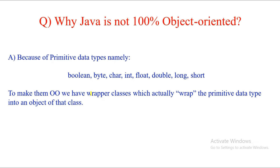As a workaround, Java created wrapper classes. Wrapper classes are nothing but a way to wrap your primitive data types into objects. So for each primitive type, Java created a corresponding wrapper class — for example, making the first letter capital — such as Boolean, Character, Float, and so on.